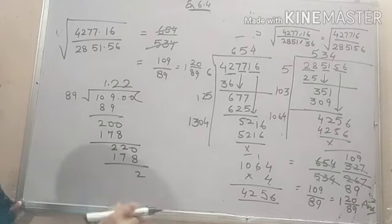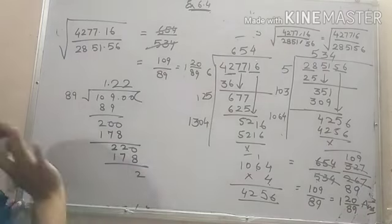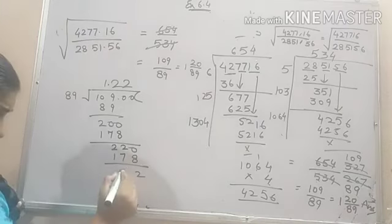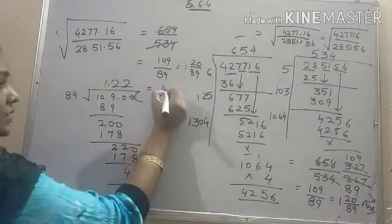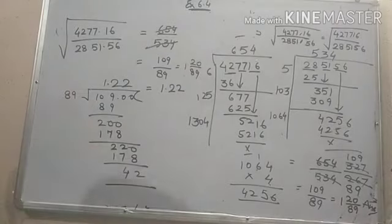We always solve our problem till 2 decimal places. Because we don't know whether it will be going to go like this only. Or it will be going to terminate. So it is better to find your solution up to 2 decimal places. 42 is our remainder. So the answer is 1.22. Okay. That solves our problem.